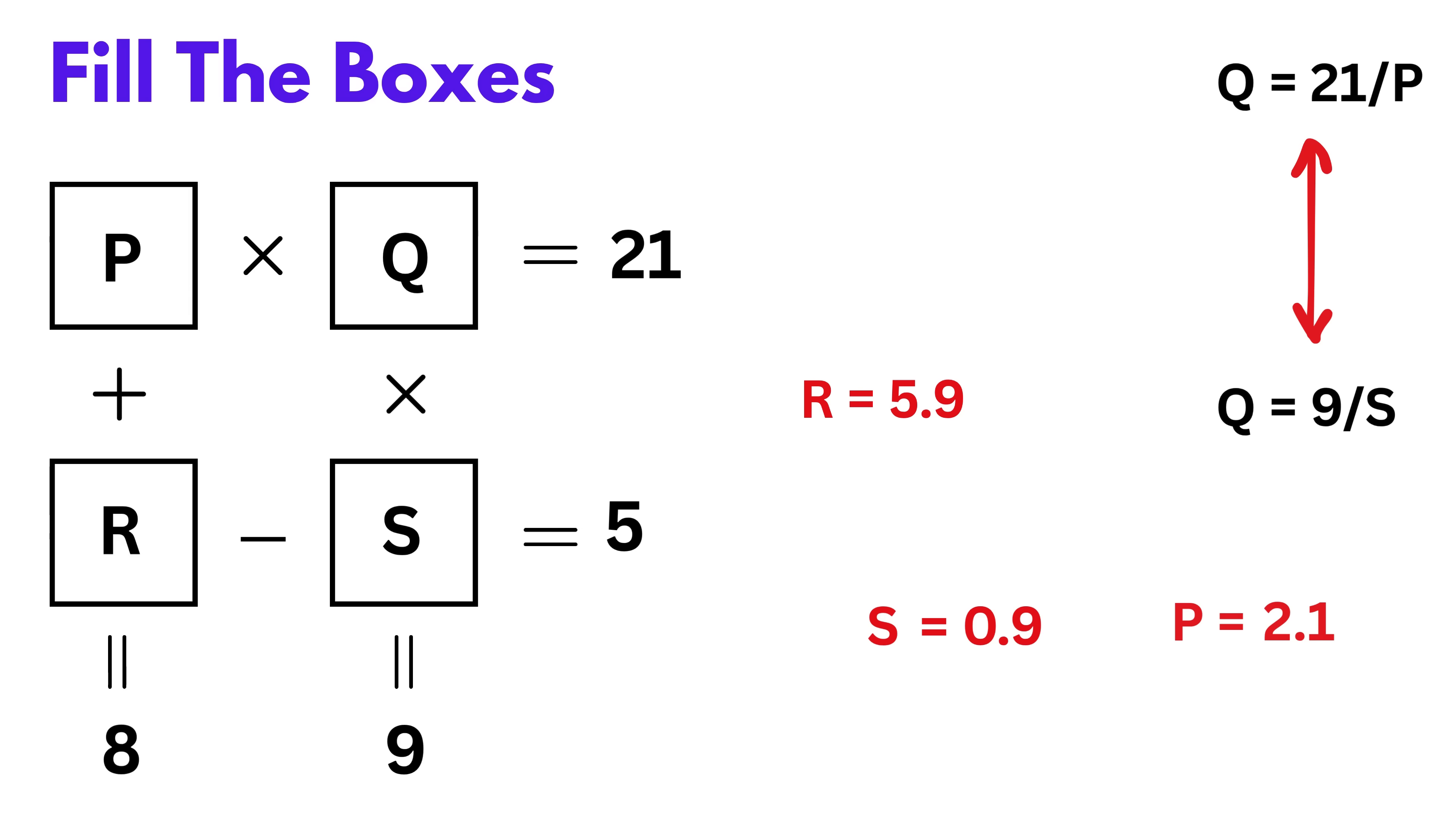Finally, we can find Q using the first equation. So Q equals 21 divided by 2.1, which is 10. And that's it. We have our values.